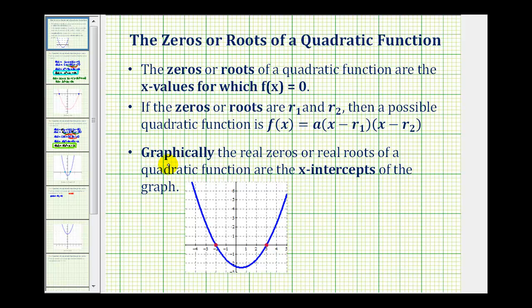One last comment is that graphically, if the zeroes are real, which they're not in this case, then the x-intercepts will also be the zeroes of the function. But since our zeroes are not real, if we graph our function, it should not intersect the x-axis.